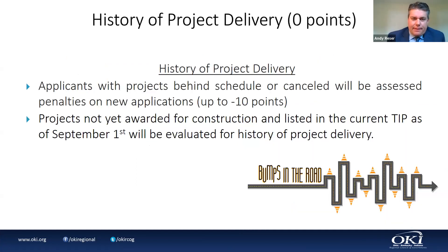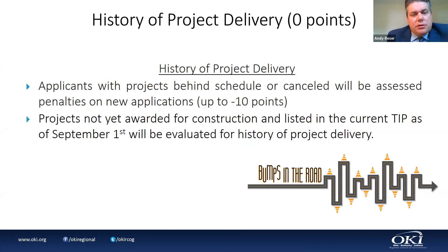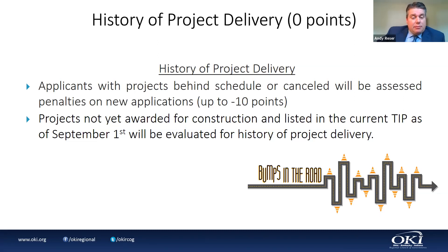History of project delivery: applicants with projects behind schedule or canceled will be assessed penalties on new applications. The maximum penalty is minus 10 points. This is a snapshot of OKI-funded projects in the TIP on September 1st. One project slipping to a later year: minus three points. Two or more projects slipping: minus five points. A canceled project: minus 10 points.